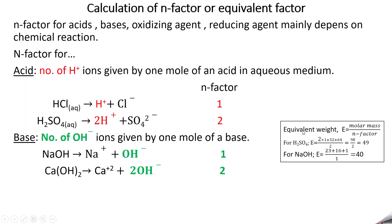Equivalent weight equals molar mass divided by N factor. For sulfuric acid: 2×1 (hydrogen) + 32 (sulfur) + 4×16 (oxygen) = 98. N factor for H₂SO₄ is 2, so equivalent weight is 98/2 = 49. For sodium hydroxide: 23 + 16 + 1 = 40, and N factor is 1, so equivalent weight is 40/1 = 40.